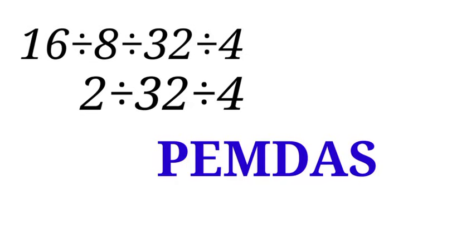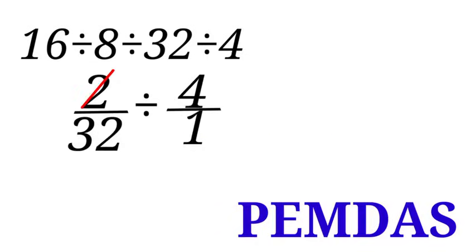So 2 divided by 32 can be expressed in this form, 2 all over 32. So 2 divided by 2 is 1, and 32 divided by 2 is 16. So we are left with 1 all over 16 divided by 4 all over 1.